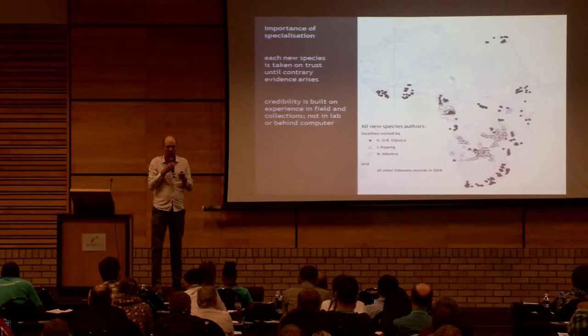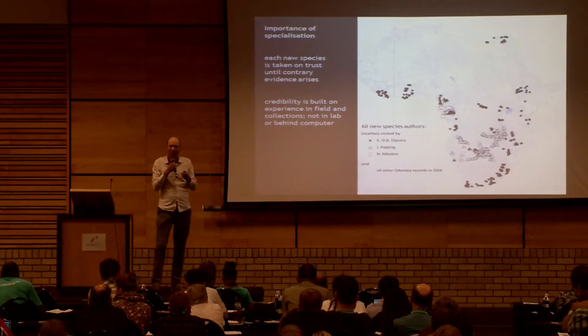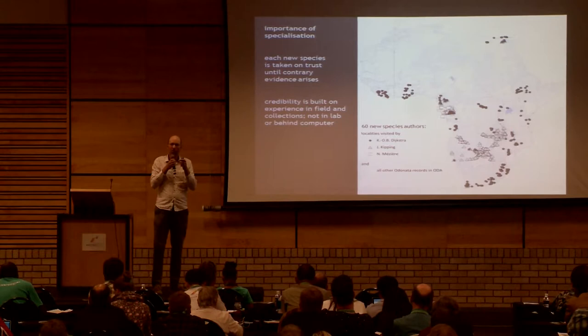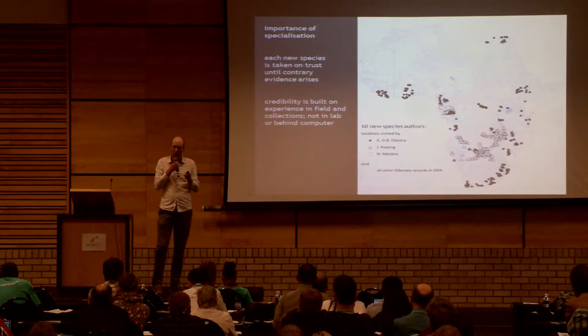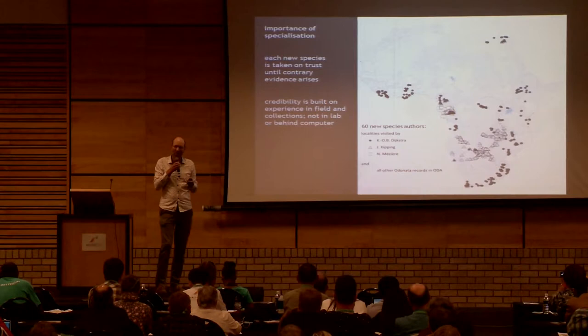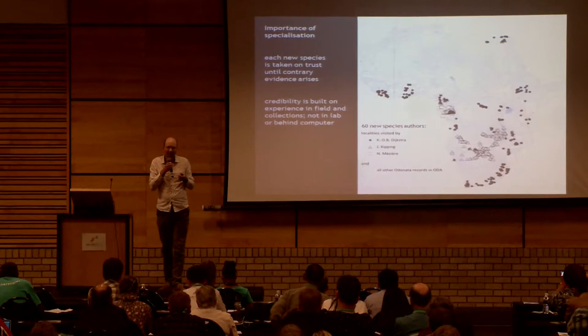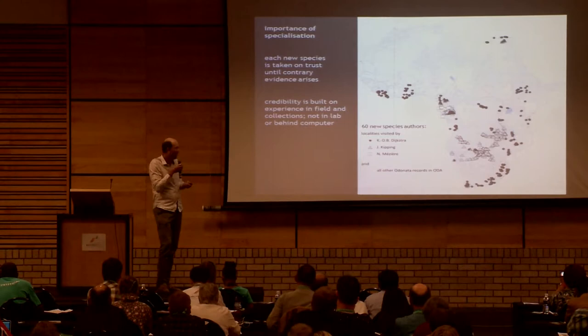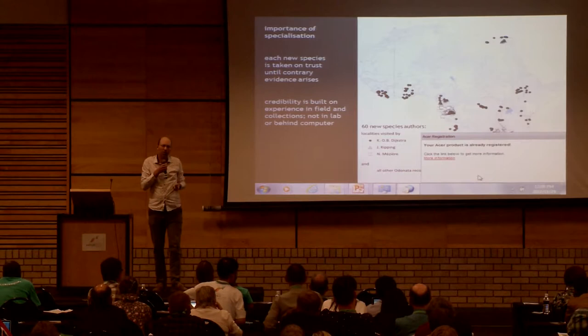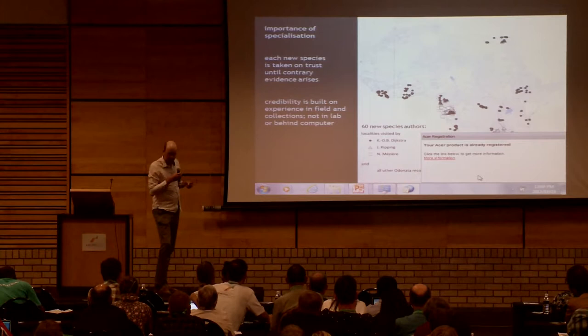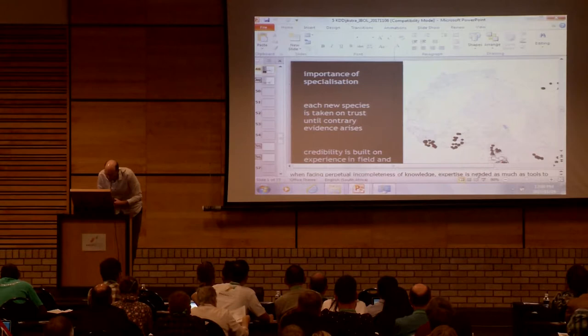The important message in the background is the importance of specialization — having biologists who truly know their groups. People often forget that with biodiversity and species names, we're all operating on trust. You expect me to be right, to know my species. That's a big thing to ask, especially when so little is known. I can only develop that expertise in the field — not purely in the lab or the collection. My two co-authors and I had to travel all over the continent to obtain this knowledge.